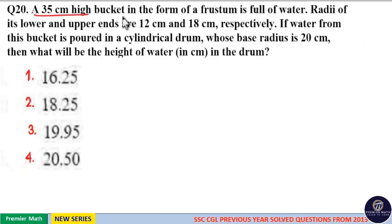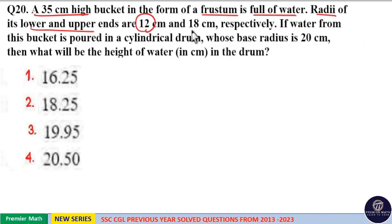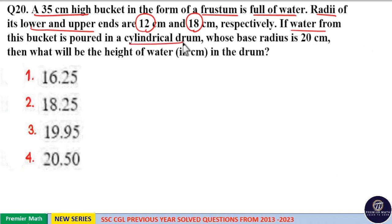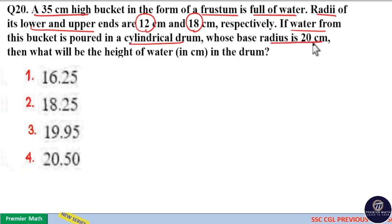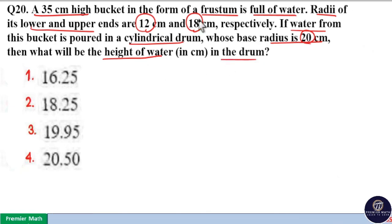A 35 cm high bucket in the form of a frustum is full of water. The radii of the lower and upper ends are 12 cm and 18 cm respectively. If water from the bucket is poured into a cylindrical drum whose base radius is 20 cm, what will be the height of water in the drum?